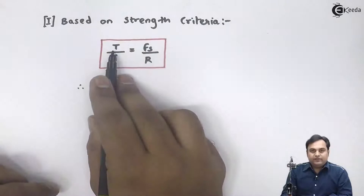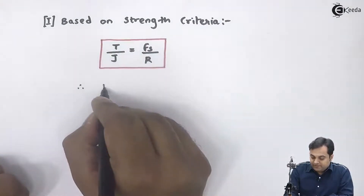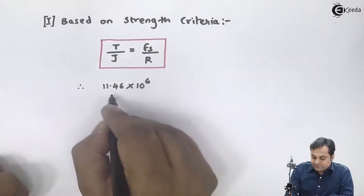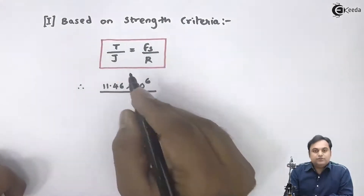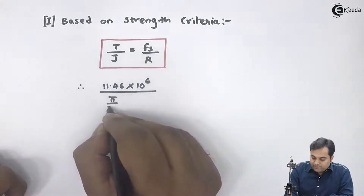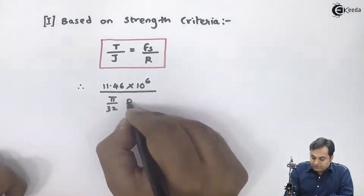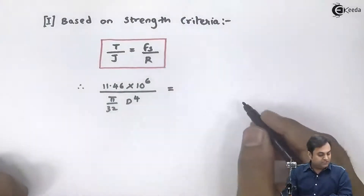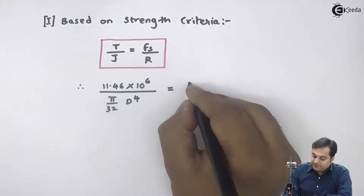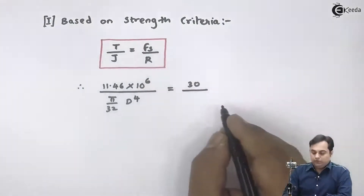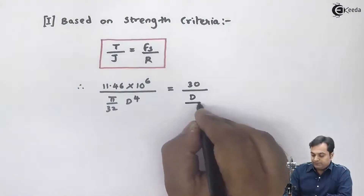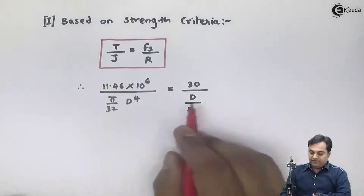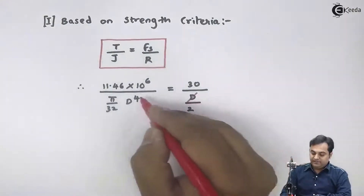Substituting values: T is 11.46 into 10 raised to 6, J is pi by 32 times D raised to 4 for a solid shaft, fs shear stress is given as 30 newton per mm square, and r is equal to D divided by 2. From the left-hand side and right-hand side, D in the numerator and denominator will cancel.